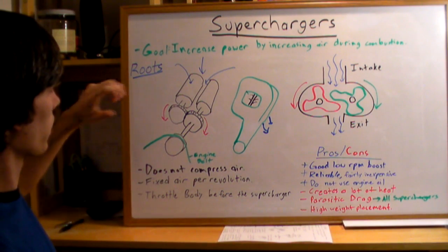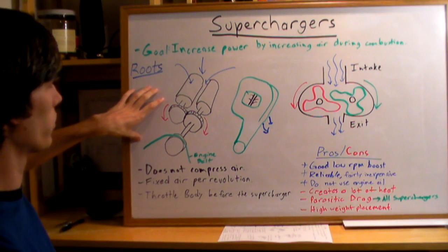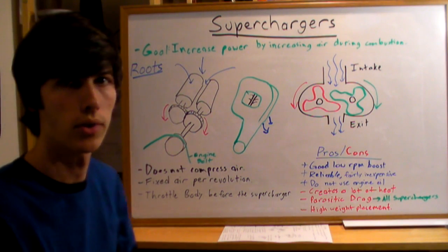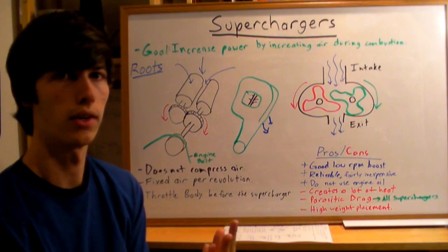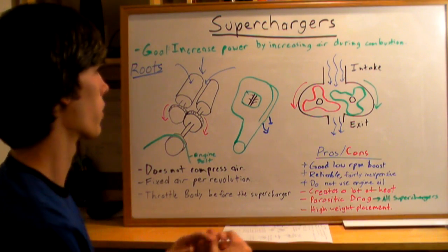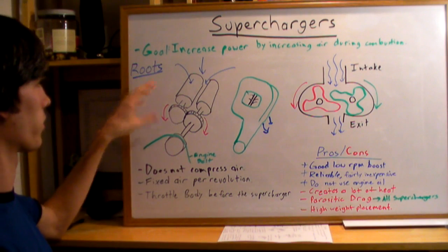The specific example that I'm going to use here is a roots supercharger. There are three main types: a roots supercharger or blower type, a twin screw, and a centrifugal supercharger. For this example, I'm going to be explaining the roots supercharger.